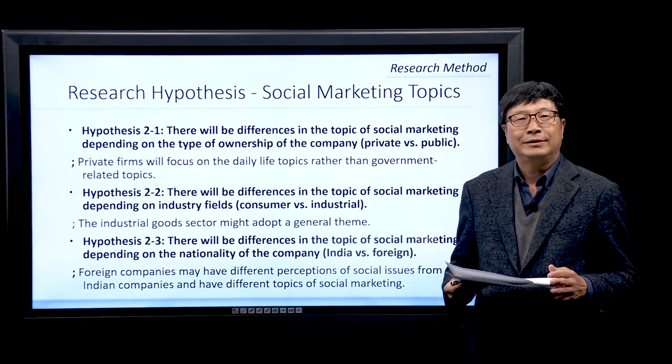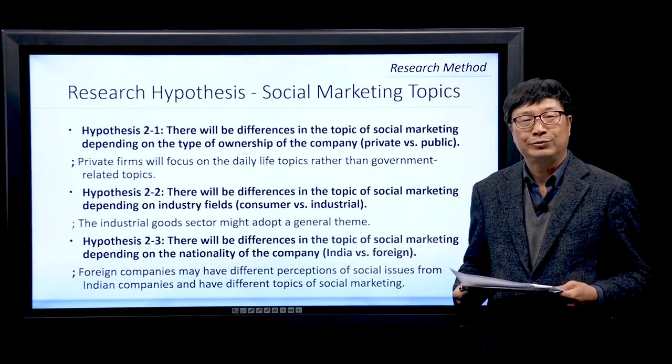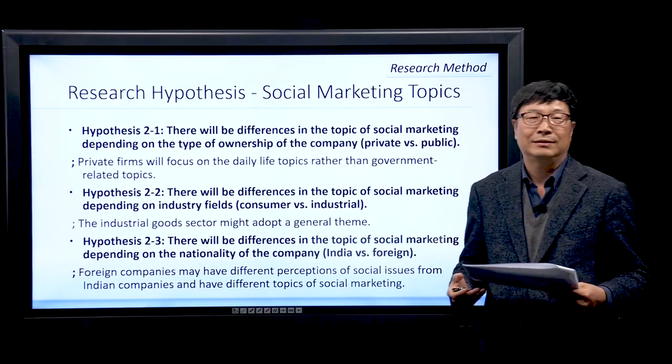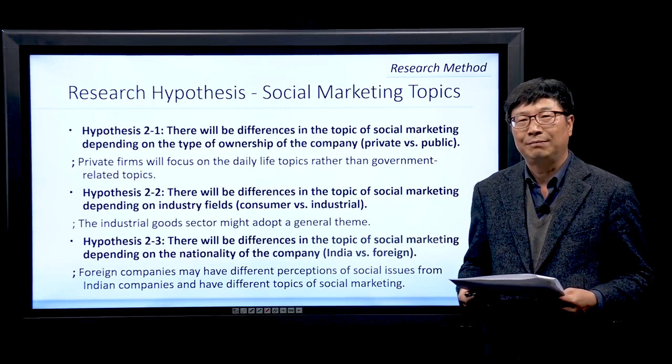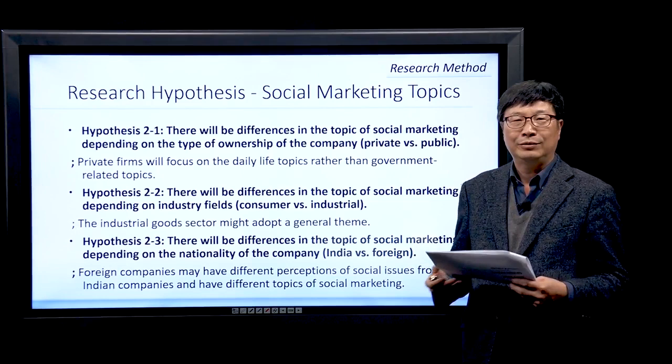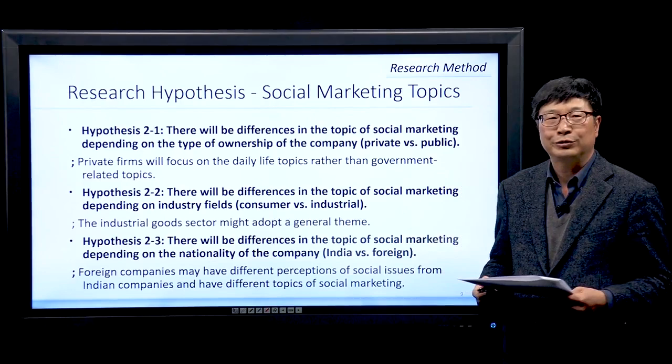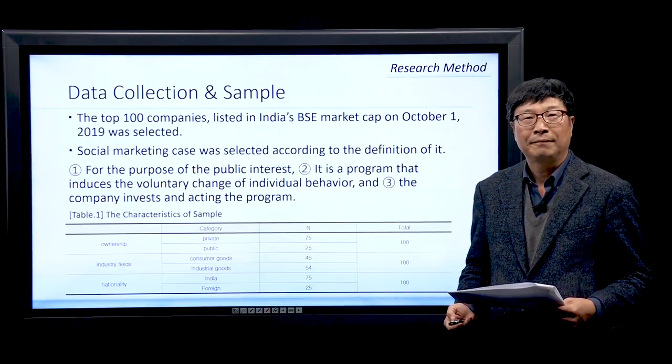The second section of hypotheses concerns social marketing topics. The first hypothesis is that there will be a difference in the topic of social marketing depending on the type of ownership. The second hypothesis is that there will be a difference depending on industry fields. The final hypothesis is that there will be a difference in the topic of social marketing depending on the nationality of the company.